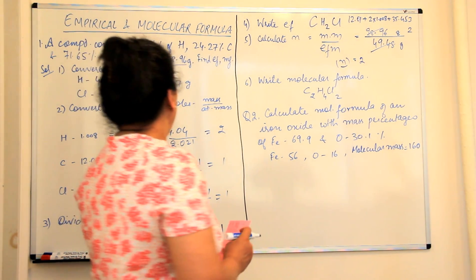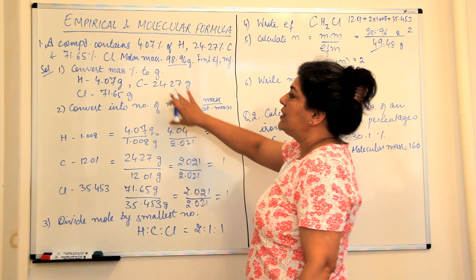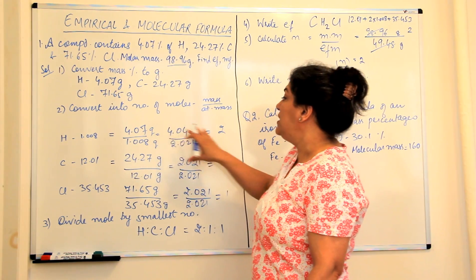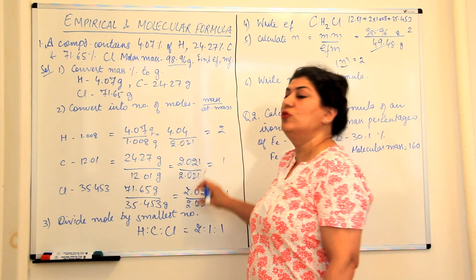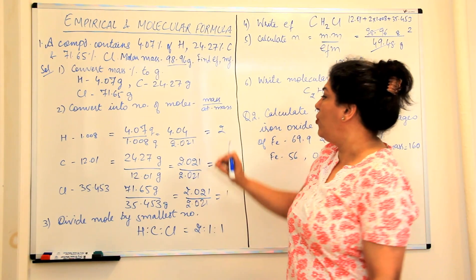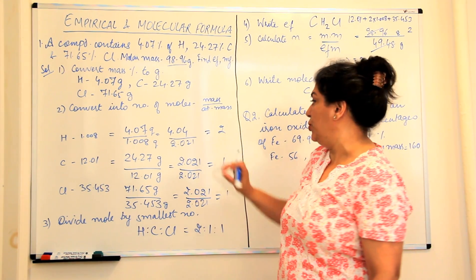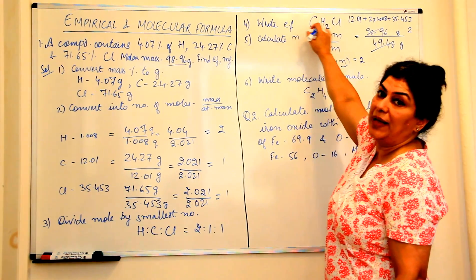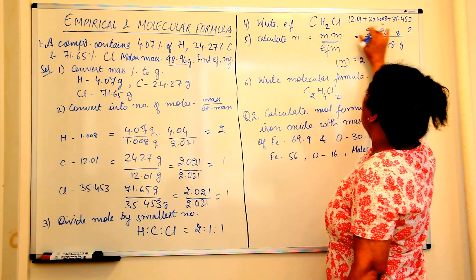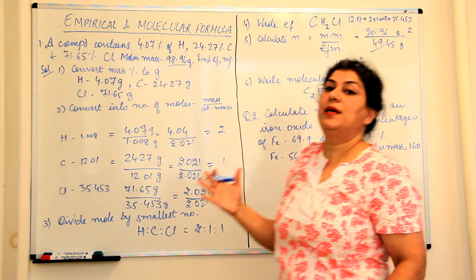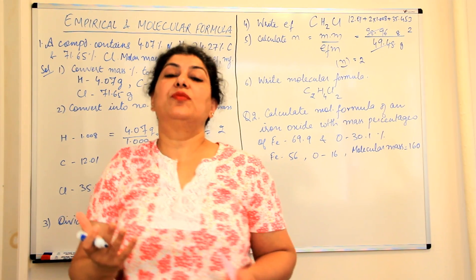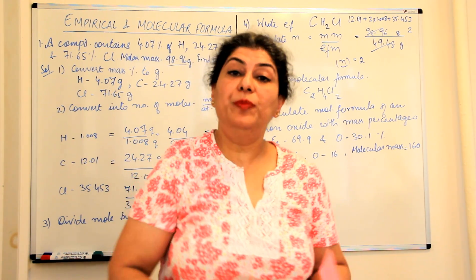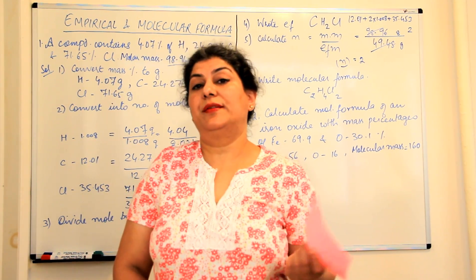So, to summarize what we did: we first converted mass percentages to grams, then converted those grams into number of moles of each element. Once we found the number of moles, we divided all values by the smallest to achieve the least ratio, giving us the empirical formula. We then calculated the empirical formula mass, divided the molecular mass by it to get N, and multiplied the empirical formula by N to obtain the molecular formula.